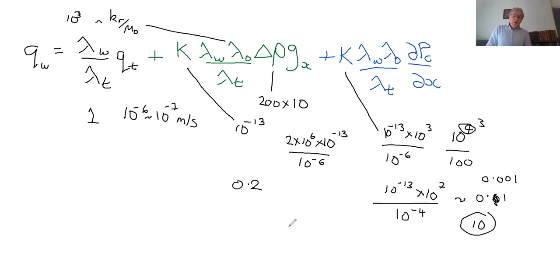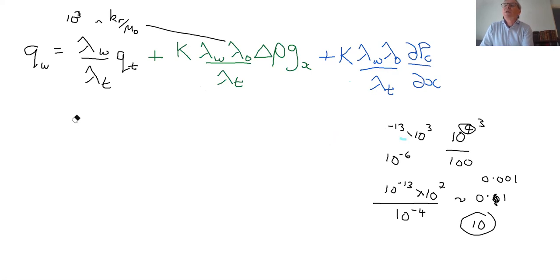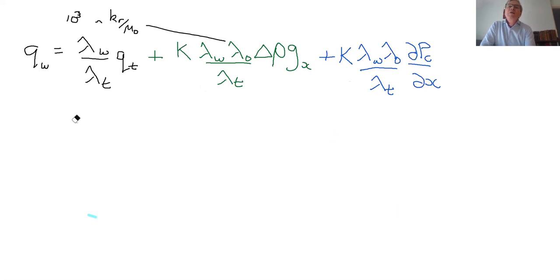So this can be often 10 or 100 times larger than the gravitational effect over about a meter. So when we're looking at counter current flow if we're looking at a fractured domain heavily fractured with major fractures every meter or so actually this term dominates.